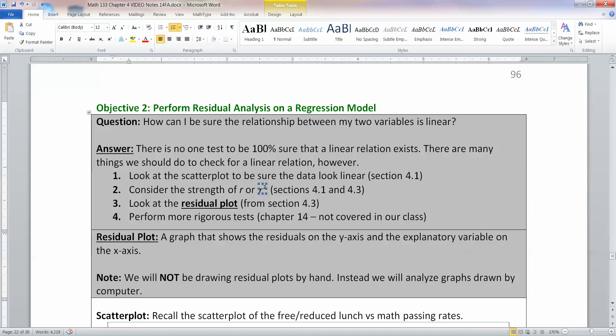r, we learned, was the correlation coefficient from section 4.1. r squared is that r value squared, which is called the coefficient of determination, and we considered that earlier in this section. And now we want to consider residual plots.